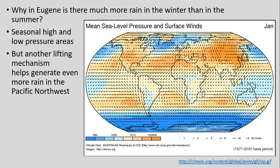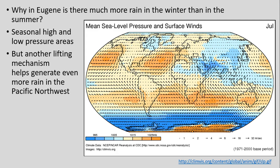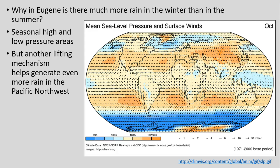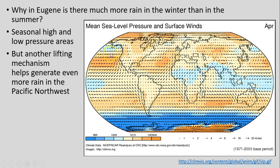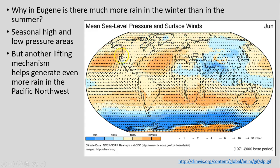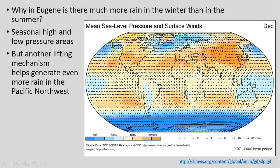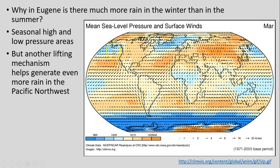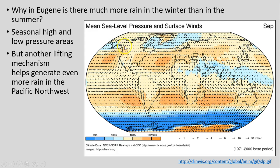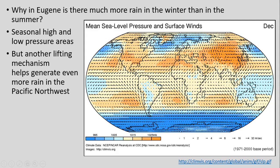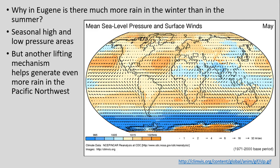Convergent lifting is also important in Eugene, where much more rain occurs in winter, in part because of high and low pressure systems. Relatively high pressure dominates in the summer months off the west coast, but moving to winter months, we can see in this animation that lower pressure areas dominate and spawn into the western United States and northwestern North America, creating a lot of the precipitation we receive in winter months here in Eugene.